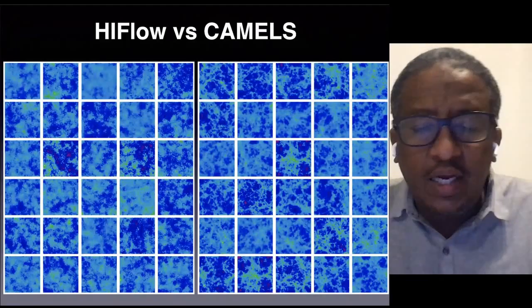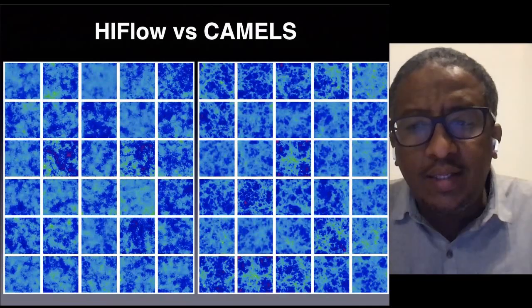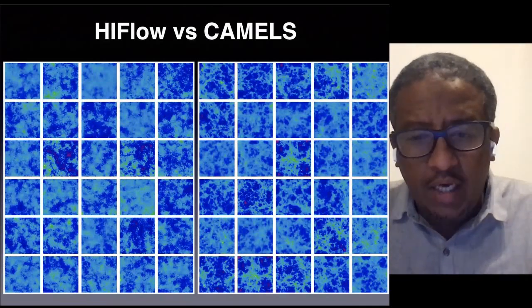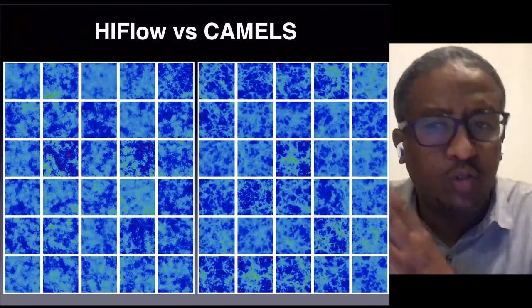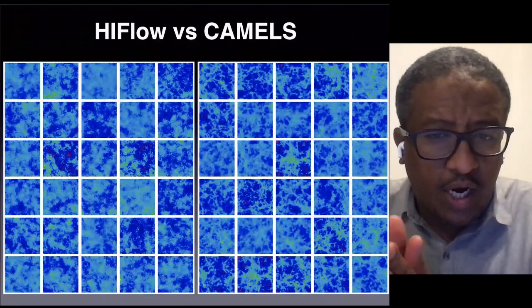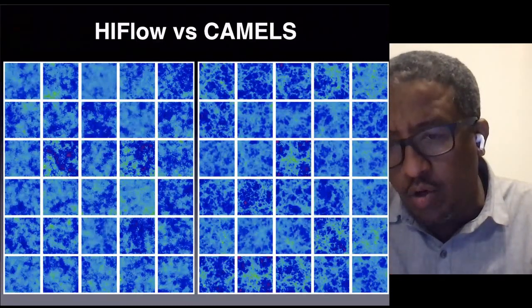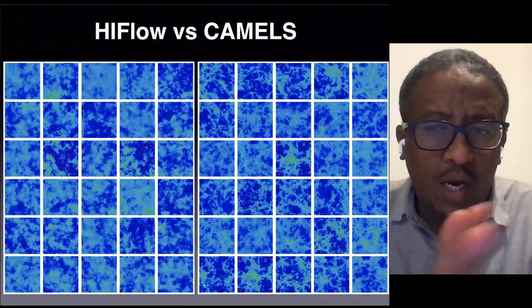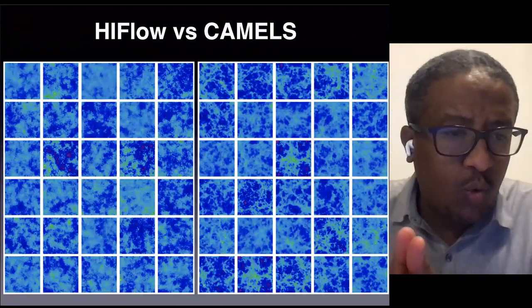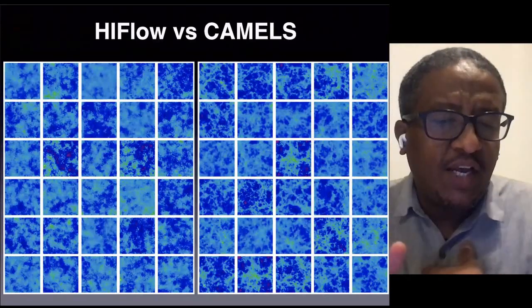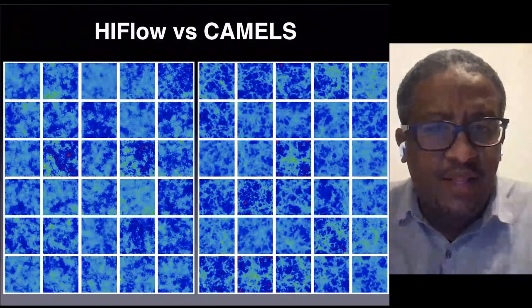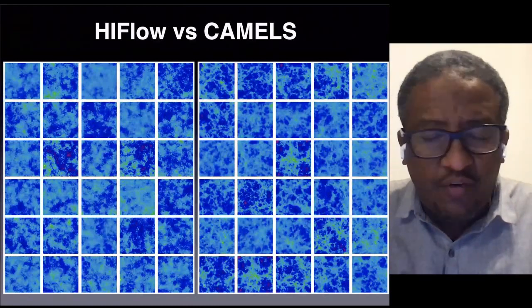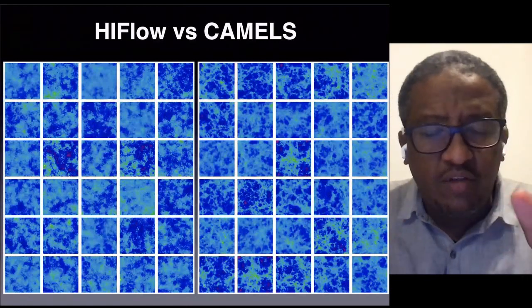Let's get into the details of the results. Here is the comparison between CAMELS and H1 Flow. On the right-hand side, we have the CAMELS data set, which shows examples of the neutral hydrogen maps at the end of reionization — at around redshift six. These are maps of the neutral hydrogen computed by collapsing boxes of the simulation along a line of sight into one map. On the left-hand side, these are examples generated by H1 Flow, the model I designed. When you look at larger scales, if I don't tell you which is CAMELS and which is H1 Flow, it might be very difficult to recognize.